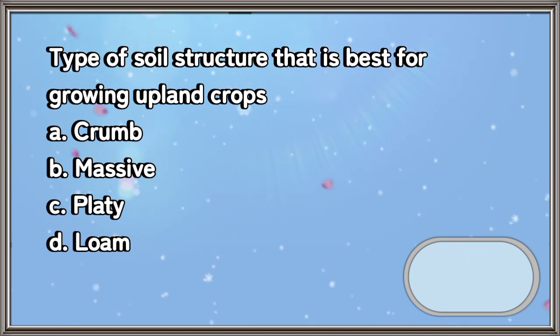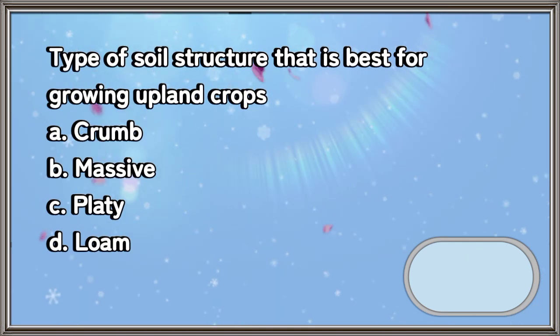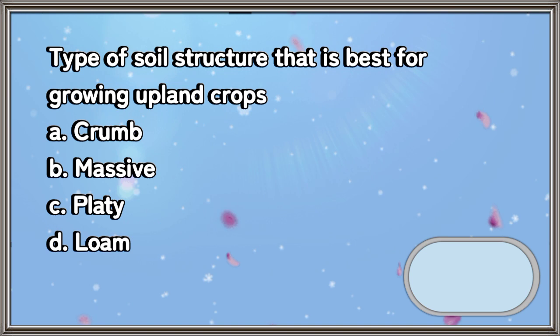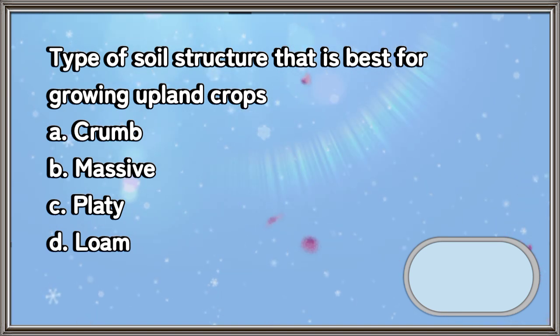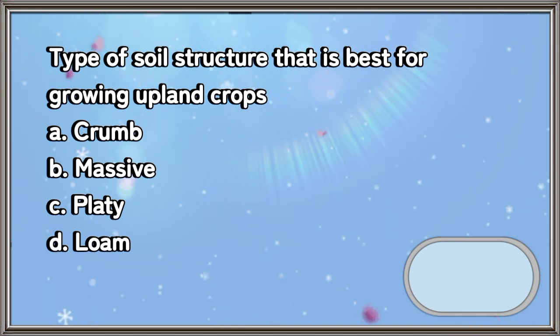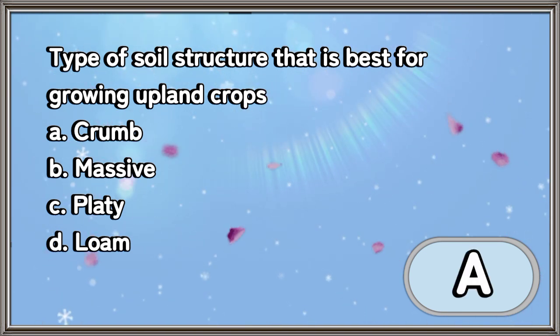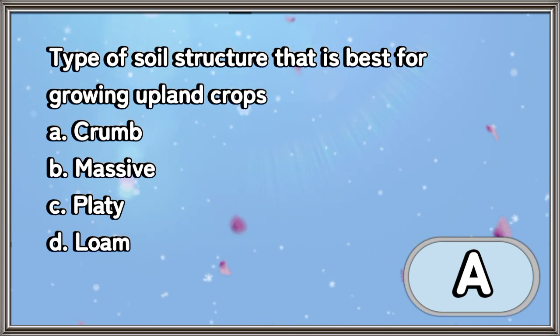Type of soil structure that is best for growing upland crops: A. Crumb, B. Massive, C. Platy, D. Loam. The answer is letter A.